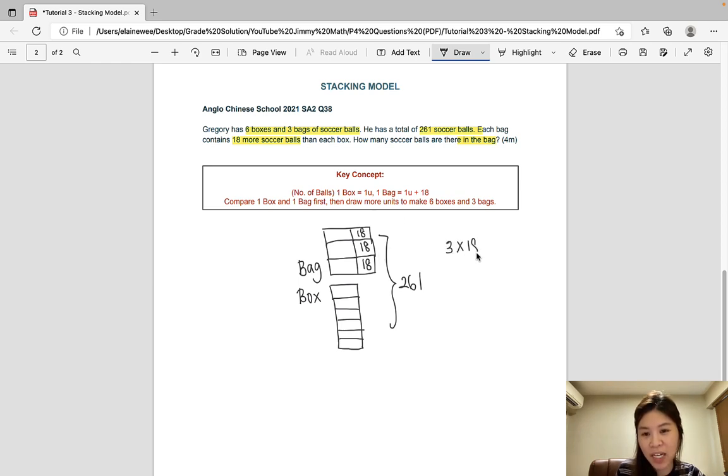So 3 times 18 gives us 54. So we should subtract 54 from the total such that we have equal units. Alright, so let's count how many units there are. 1, 2, 3, 4, 5, 6, 7, 8, and 9.